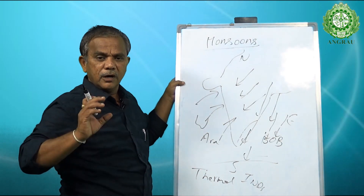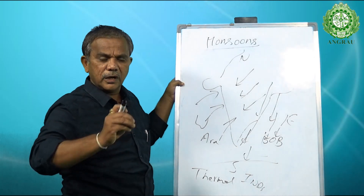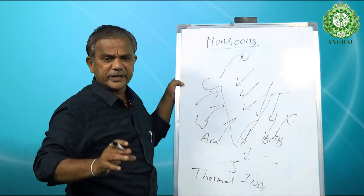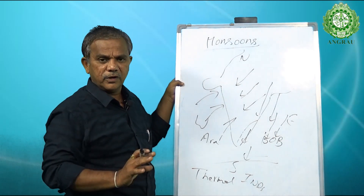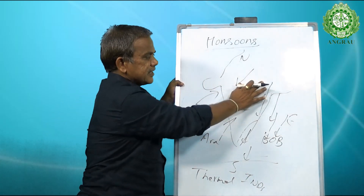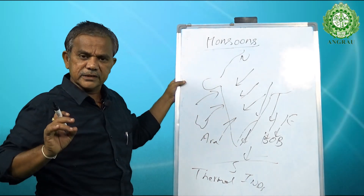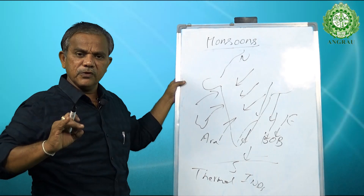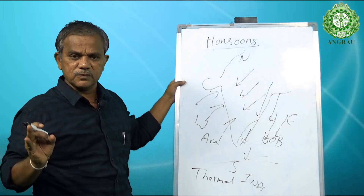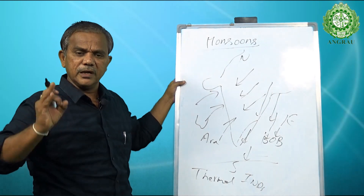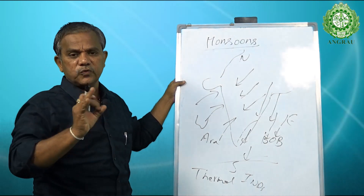That is why approximately 60 percent of Tamil Nadu's rainfall and rainfall in the southern zone of Andhra Pradesh comes from the northeast monsoons, whereas the rest of the country does not receive any significant rainfall. This is also the reason why, even though we classify monsoons into southwest monsoons and northeast monsoons, conventionally the monsoon season refers only to the southwest monsoon.